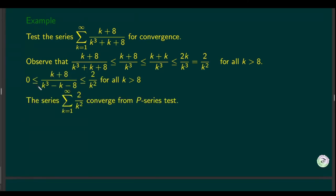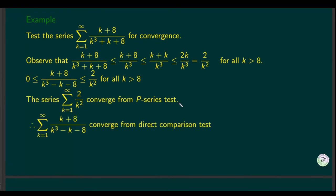Since the series 2/k² converges by the p-series test, and the original series is less than or equal to 2/k² for k greater than 8, by the direct comparison test we conclude that the original series is convergent.